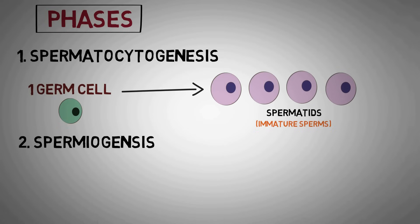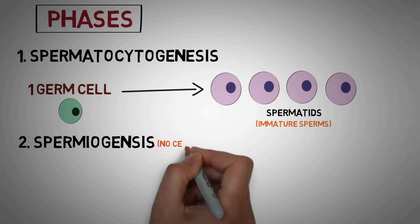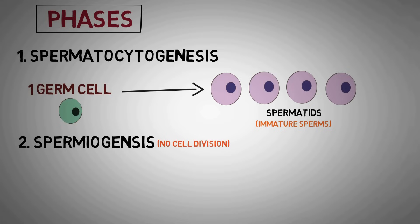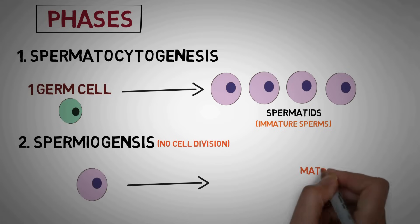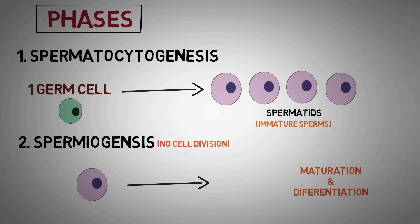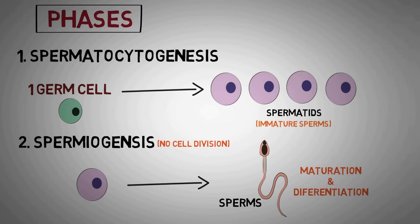The second phase is spermiogenesis, in which no further cell division occurs, but the immature sperms go through the process of maturation and differentiation to form mature sperms.